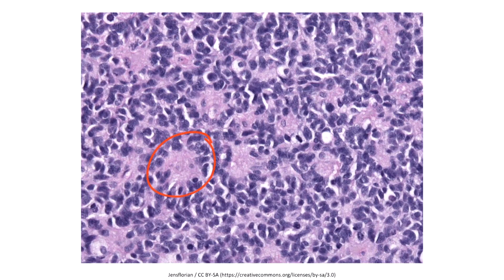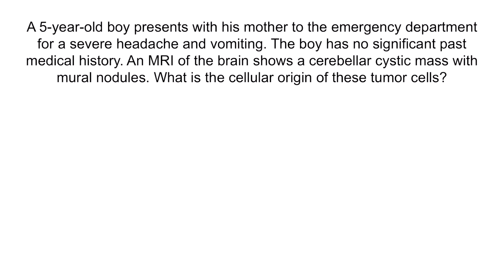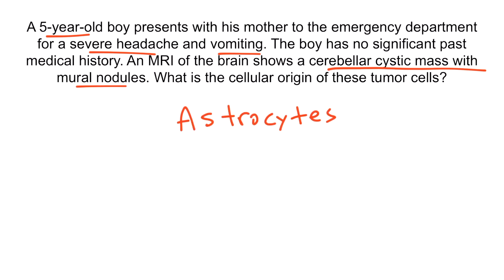Let's review with another question. A five-year-old boy presents with his mother to the emergency department for a severe headache and vomiting. An MRI of the brain shows a cerebellar cystic mass with mural nodules. What is the cellular origin of these tumor cells? This presentation is suggestive of pilocytic astrocytoma, which is a benign tumor of astrocytes. So the answer is astrocytes.